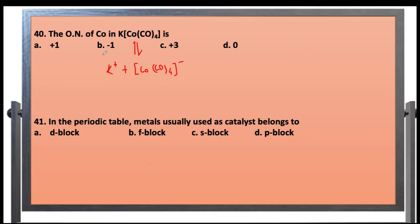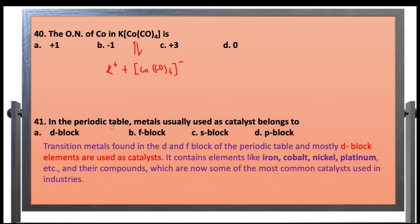Question 41: In the periodic table, the metal usually used as a catalyst belongs to which group? Transition metals are found in the D and F blocks of the periodic table, and mostly D block elements are used as catalysts. D block elements include iron, cobalt, nickel, and platinum — their compounds are among the most common catalysts used in industries. So D block elements are mostly catalysts, and option E is the correct answer.